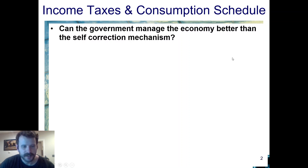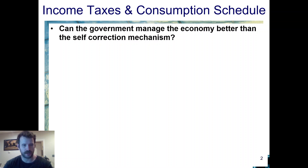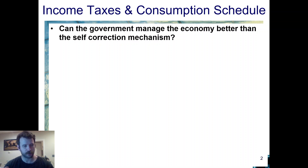In the case that you're in an inflationary or recessionary environment, can the government do better than relying on the self-correcting mechanism? Remember from the last lecture, particularly for recessions, the self-correcting mechanism was pretty weak and pretty slow because it relied on decreasing prices. And because of sticky wages and sticky prices, particularly on the downward side, it's less reactive — it's going to take a while.